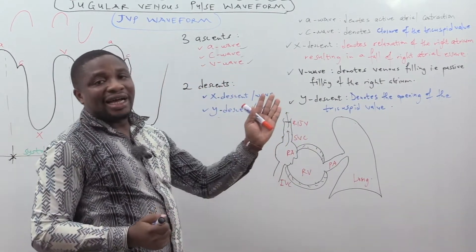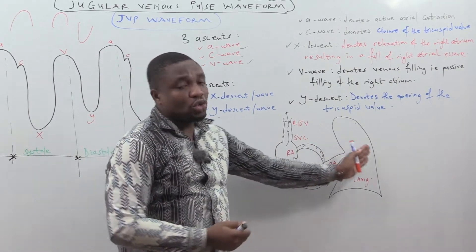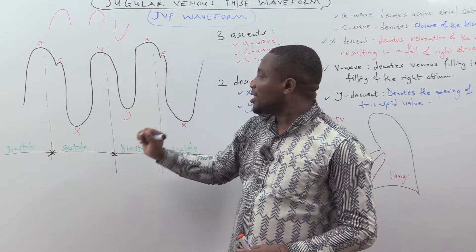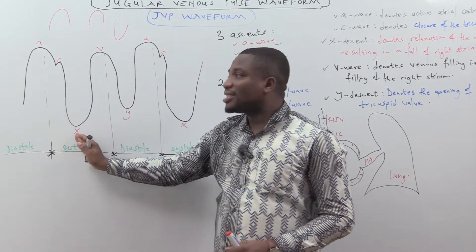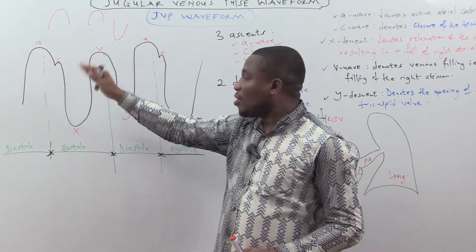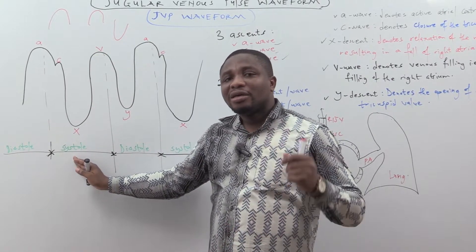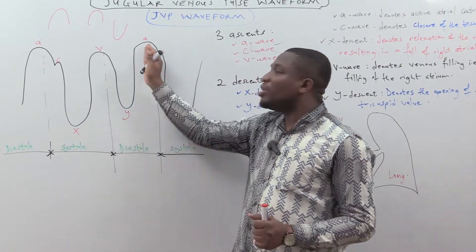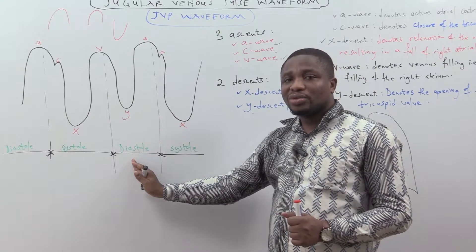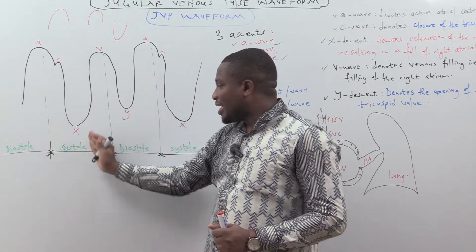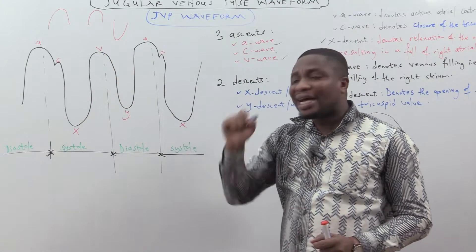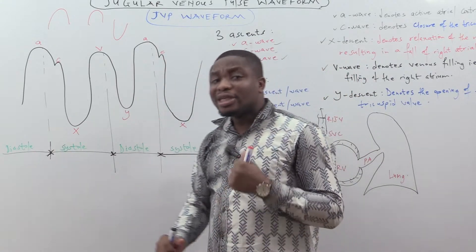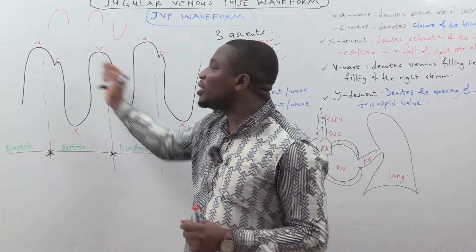Now that we understand the meaning of the various waves, let's understand why they follow that particular pattern. You should know that the C wave, the X descent, and the V wave all occur in ventricular systole, when the ventricles are contracting. And the Y descent and the A wave occur in diastole. So in systole you have the C wave, the X descent, and the V wave, whilst in diastole you have the Y descent and the A wave.